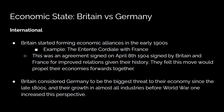Getting into the economic state of Britain and Germany: starting in the early 1900s, Britain began to form economic alliances and sign treaties. Before that, they had been very closed off and tried to remain more national with their economy and political alliances. The Industrial Revolution brought about some change. One example was the Entente Cordiale with France — an agreement signed April 8th, 1904 by Britain and France to improve relations and propel their economies forward together. During the early 1900s and late 1800s, Britain considered Germany to be the biggest threat to their economy because of Germany's growth in almost all industries before World War I.